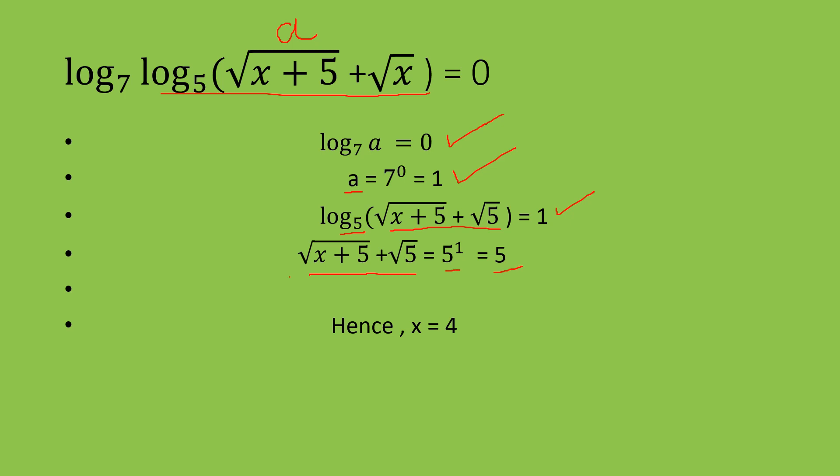Now, since this value is equal to 5, out of the given options, you get x is equal to 4, because if you put x is equal to 4, only then this item will get a perfect square. Therefore, the answer is x is equal to 4.